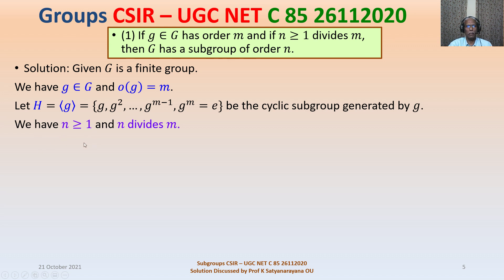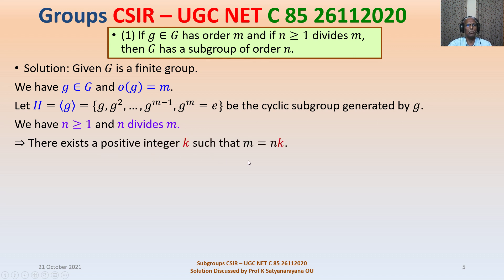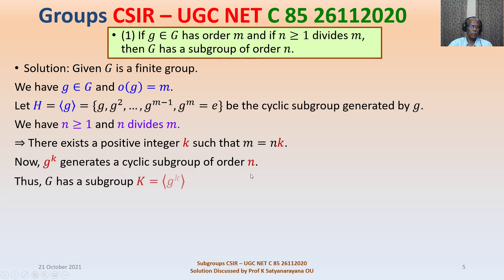We are given N ≥ 1 and N divides M, so there exists a positive integer K such that M = NK. Consider the element g^K — it generates a cyclic subgroup of order N. Thus G has a subgroup of order N, so the statement in Option 1 is true.